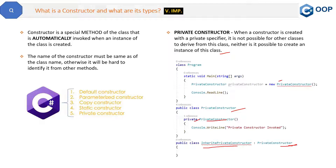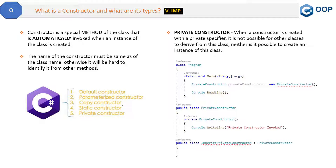So if the private constructor doesn't allow object creation or inheritance, what is its purpose? The purpose of a private constructor is related to the singleton design pattern. I will go into detail on how the private constructor is useful in the singleton design pattern in a separate video. For now, just understand that with a private constructor, no object can be created and the class cannot be inherited.